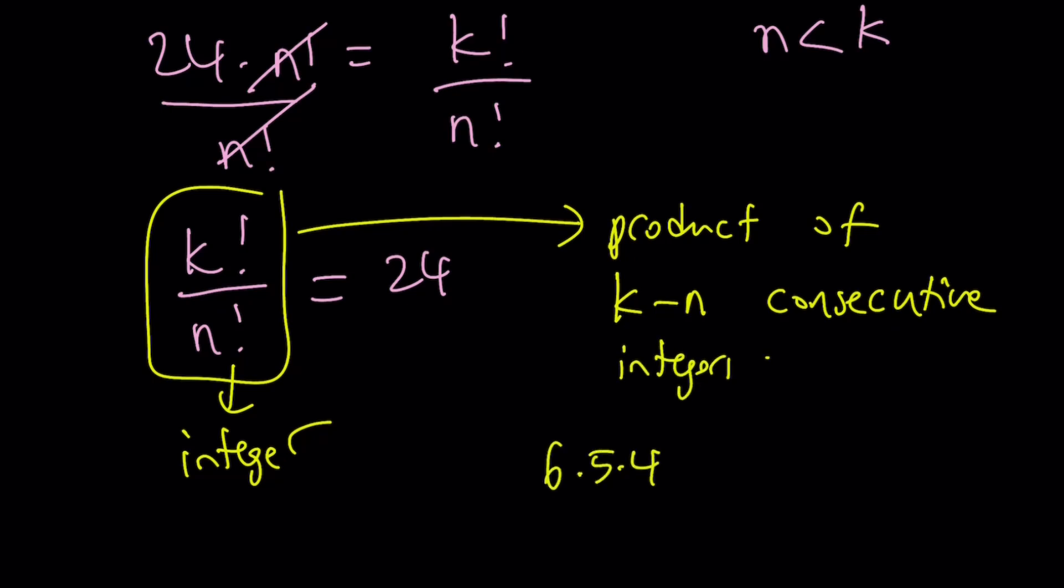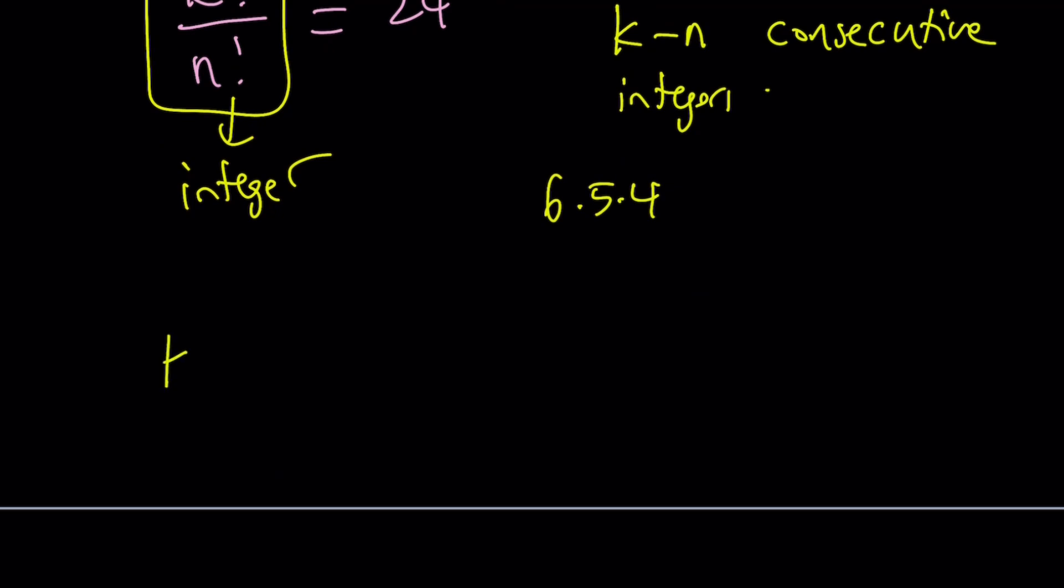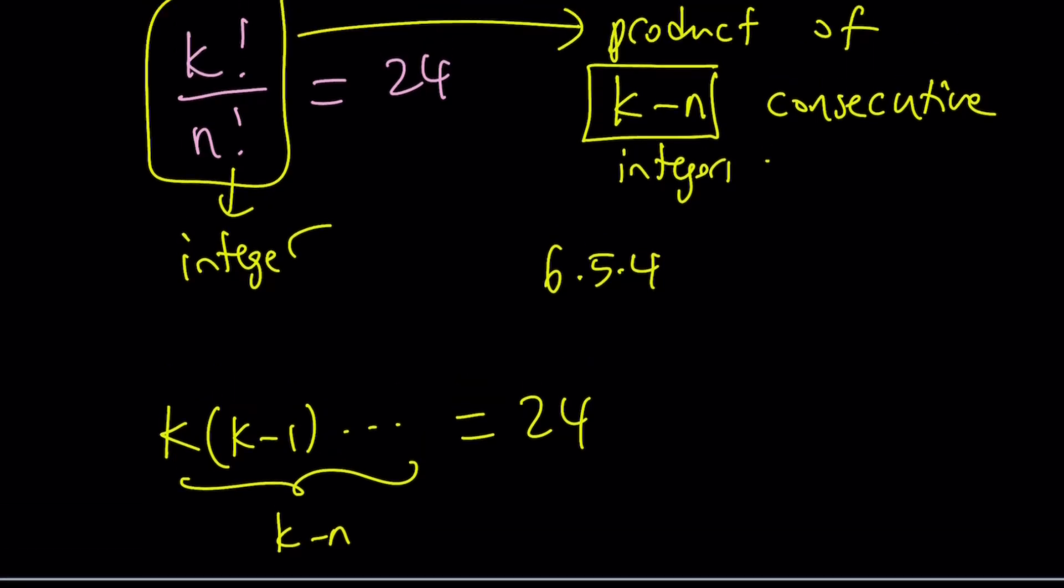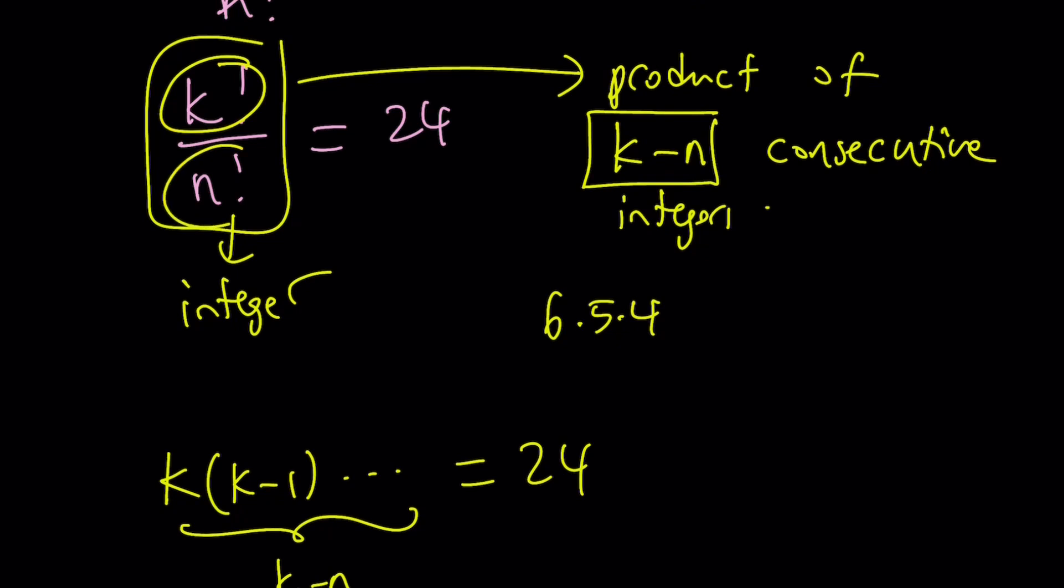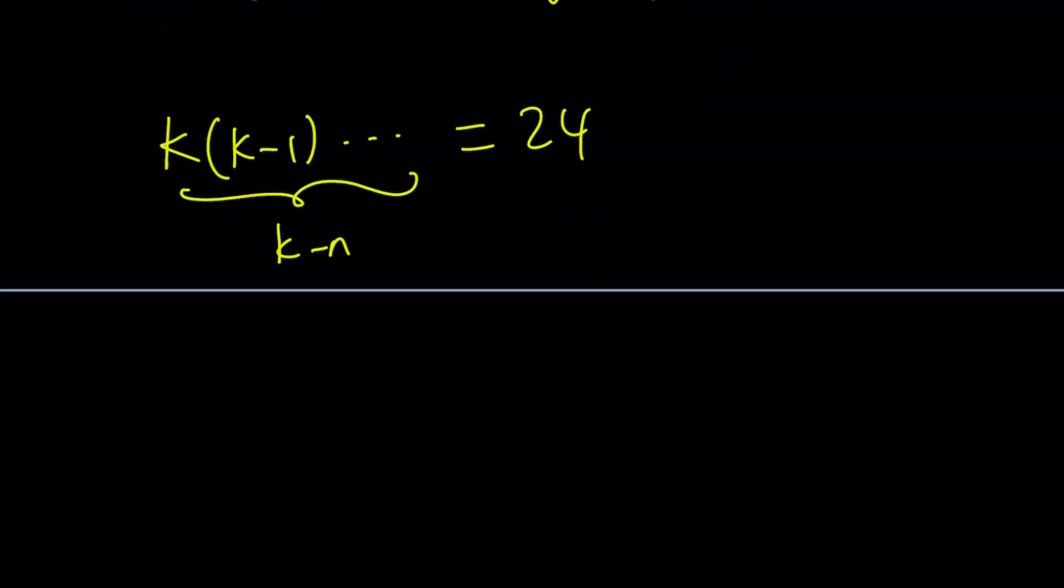We end up with k minus n numbers in the product, so it's like the product of k minus n consecutive integers. In this case, we have something like k and then k minus 1, and so on. But we only have k minus n numbers in this product, and this equals 24. So we're going to write 24 as a product of consecutive integers, and then count the number. That number gives us k minus n.